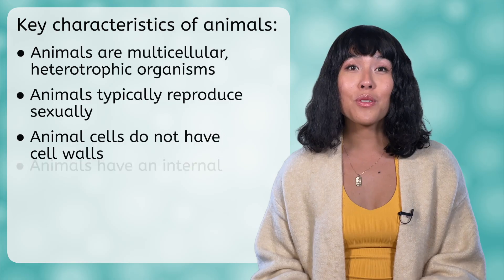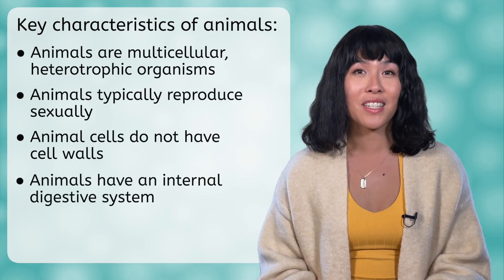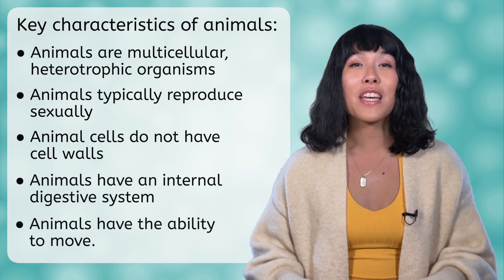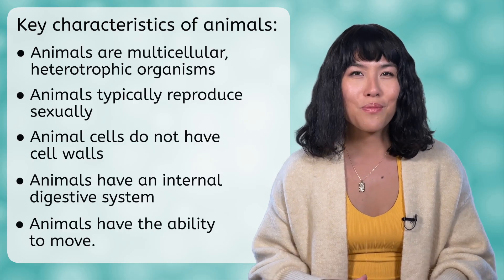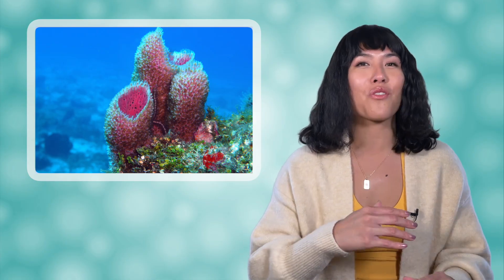4. Animals have an internal digestive system. 5. Animals have the ability to move. For the last point, movement, you may be asking yourself, what about sponges? They clearly don't move, but in fact, they do! Sponges move very slowly across the sea floor, just a few millimeters a day. Maybe we should just call them the sloths of the ocean floor. Now that we know what an animal is, let's start looking at invertebrates.